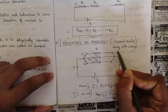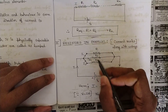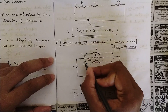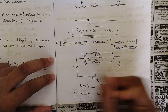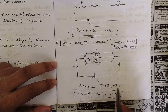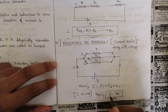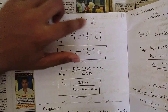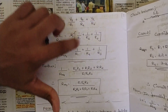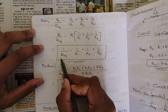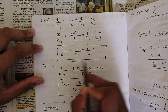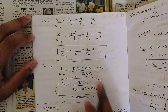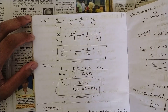For resistors in parallel, current varies while voltage is common. Three resistances are connected in three separate branches with branch currents I1, I2, I3, where I = I1 + I2 + I3. Using I = V/R, we get Vs/R_eq = Vs/R1 + Vs/R2 + Vs/R3. Cancelling Vs, 1/R_eq = 1/R1 + 1/R2 + 1/R3. Taking LCM gives the final R_eq formula for parallel resistances.